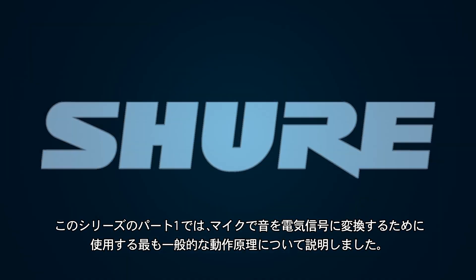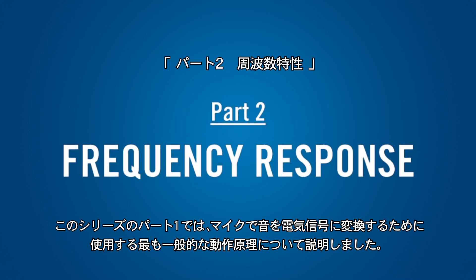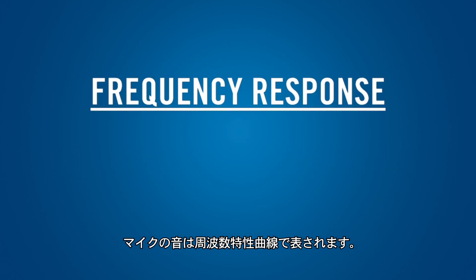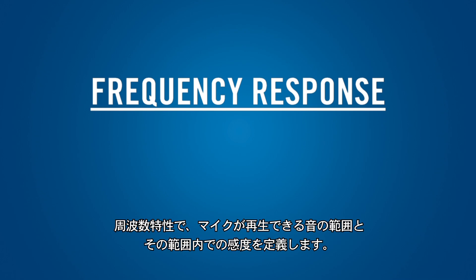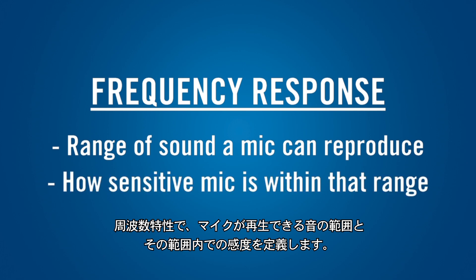In part one of this series, we covered the most common operating principles that microphones use to convert sound into an electrical signal. In this segment, we'll discuss frequency response. The sound of a microphone is illustrated by its frequency response curve. The frequency response defines the range of sound that the mic can reproduce and how sensitive it is within that range.